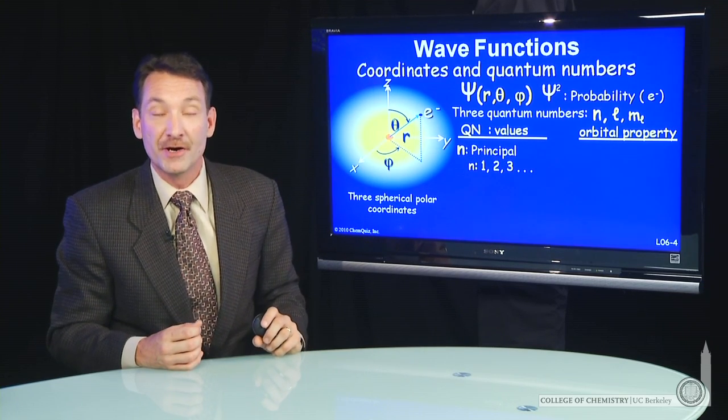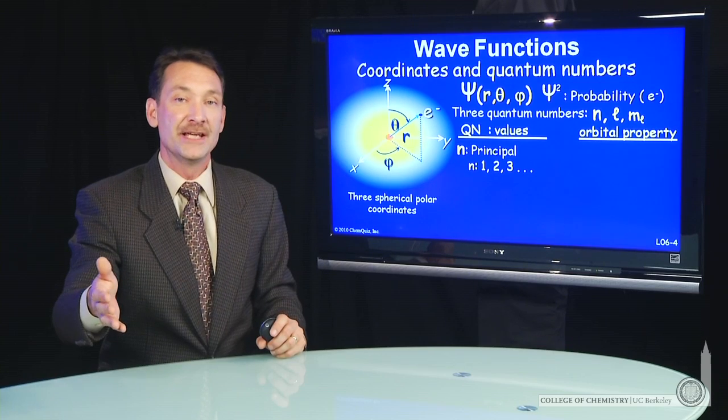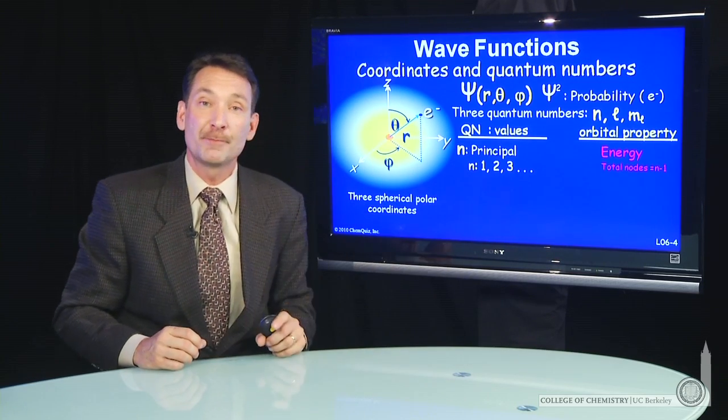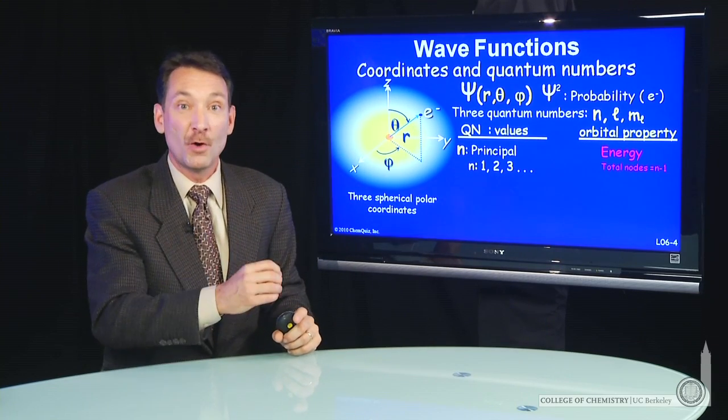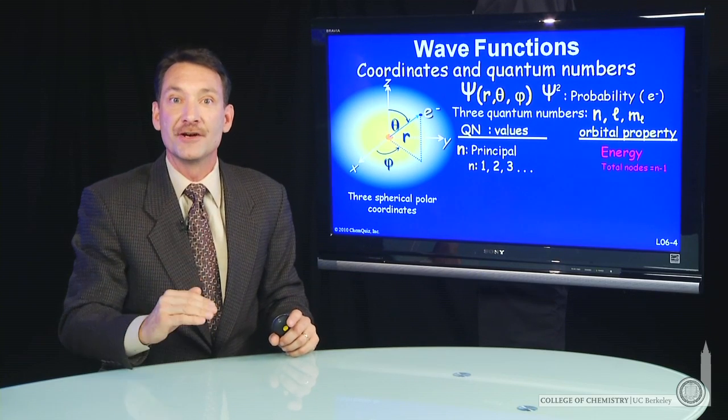So quantum number, first, the principal quantum number n, just like in a particle in a box, has values 1, 2, 3, and describes the overall energy of the system. And just like in the particle in a box, when you have the total number of nodes, n minus 1, you know how high your energy is. More nodes, more energy, or higher energy system.